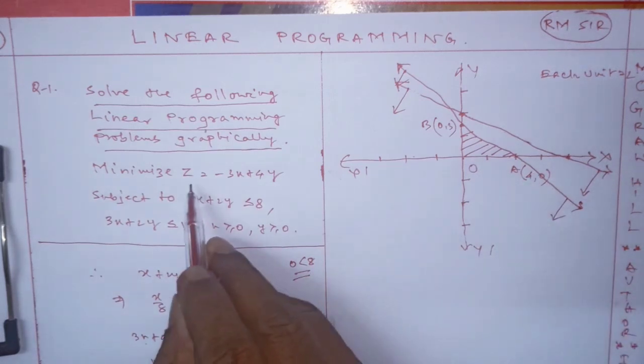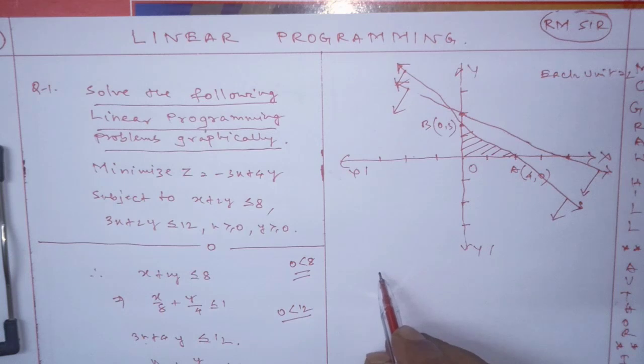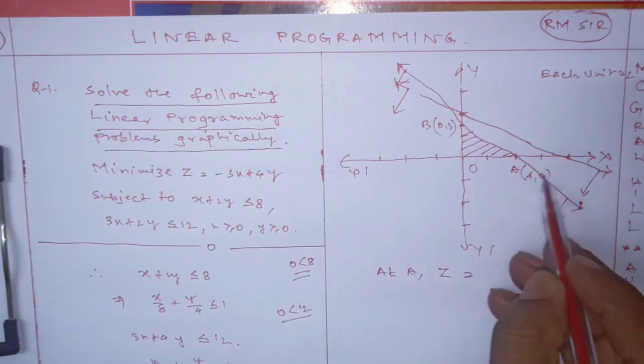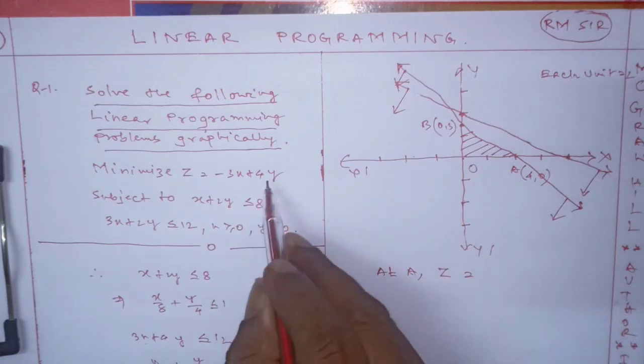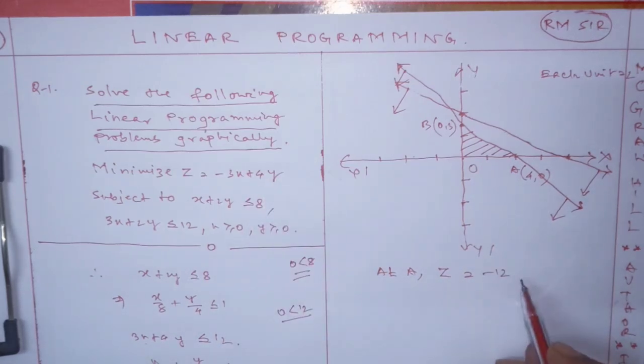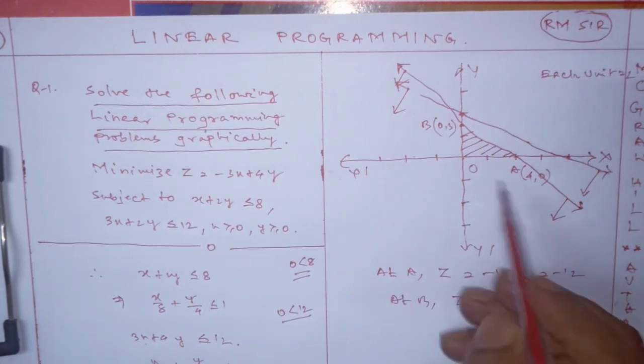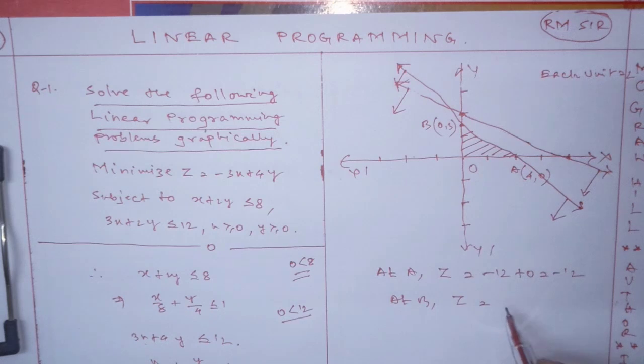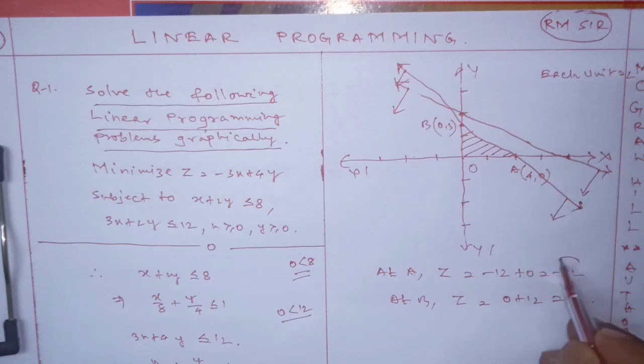Now what to find? Point A is found. Now minimize z, so at A, z equals what? x is 4, y is 0, so that is minus 12 plus 0 equals minus 12. At B, z equals what? x is 0, y is 12, so this is 12. Which one is smaller? This one is smaller.